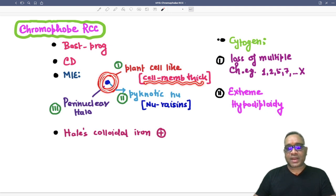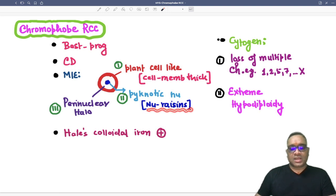You can see there will be a thick cell membrane. And the second thing will be pyknotic nuclei, which will also be called nuclear resins. So you can see in the center, there is a dark pyknotic nuclei, which is also called nuclear resins.